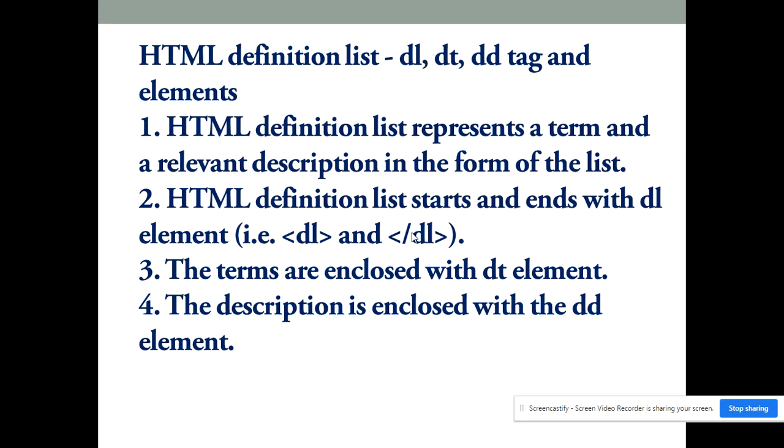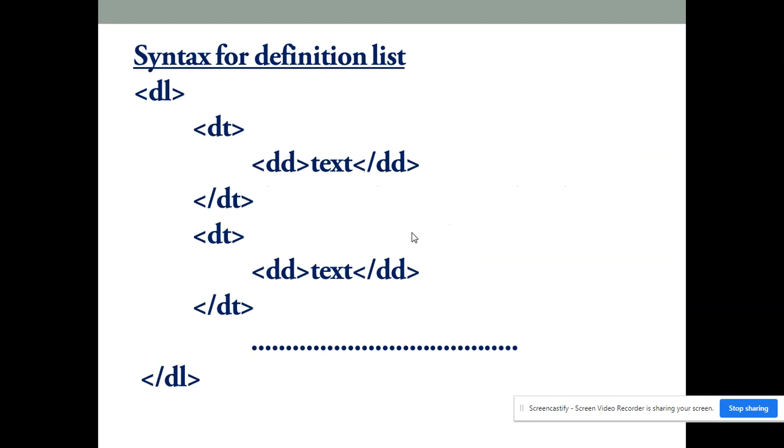Now let's check the syntax of definition list. As you can see here, it starts with DL and ends with slash DL. In between this, we define our definition list. It starts with DT, which is the term, and DD is the description about that term.